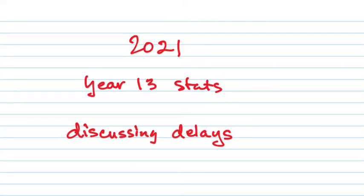Today we're going to wrap up our look at critical path analysis by talking about delays. These are the excellence questions you'll be asked — they'll give you a scenario and ask what would happen if a task was delayed by three hours, or what would be the maximum amount you could delay a task without affecting another task. Everything you do has delays, and we looked at float time to see how we could mitigate those delays.